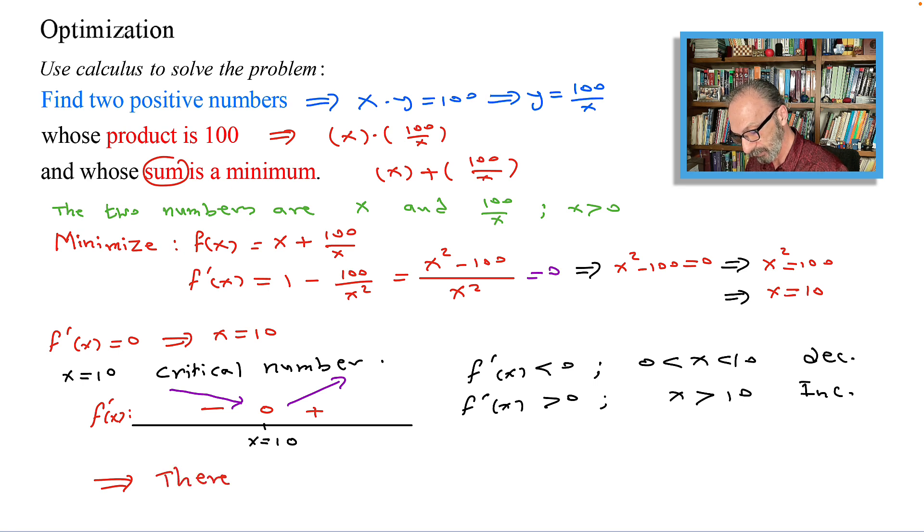Since it's the only minimum point that we have, there's an absolute minimum at x equals 10. And the numbers are: the first one was 10, and the second one is 100 over 10, which is another 10. So the numbers are 10 and 10.